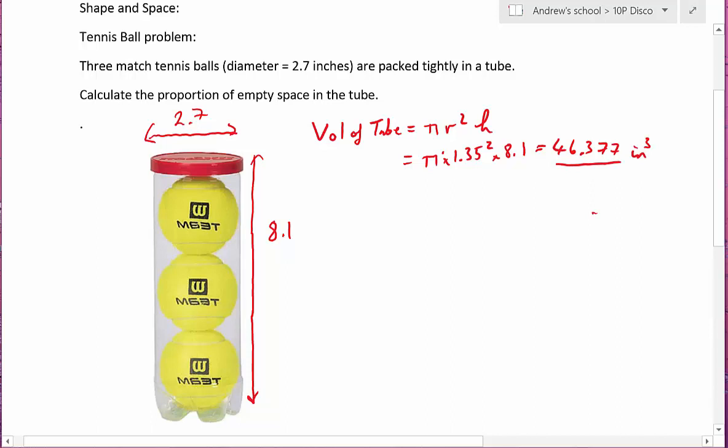What about one of the balls? Well, one ball has a diameter of 2.7 so the radius is 1.35. The volume of a sphere is 4 thirds pi r cubed. So it's 4 divided by 3 times pi times 1.35 cubed which is 10.306.